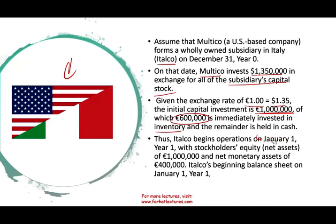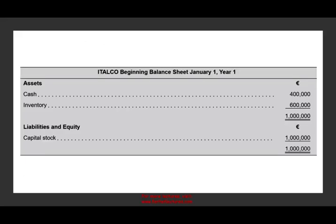The Italian company began operations on January 1st with stockholders' equity — net assets — of one million euros, and a net monetary asset position of 400,000 euros, which is cash. This is what the beginning balance sheet looks like: one million euros invested, of which 600,000 euros was immediately used to purchase inventory and 400,000 euros was kept in cash. The beginning net asset of this company is one million euros.